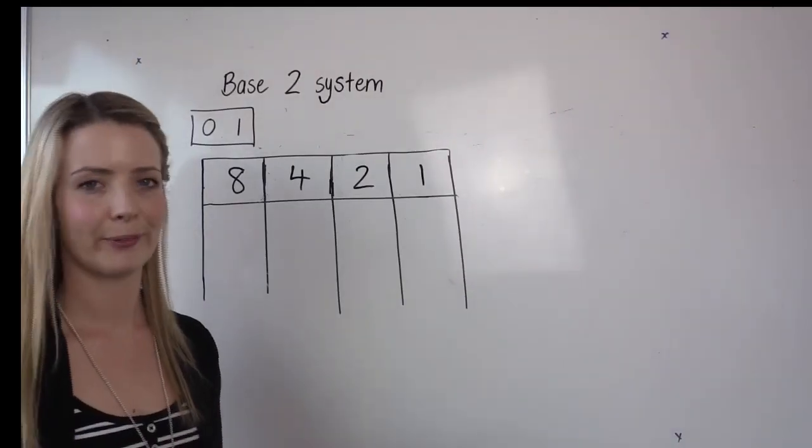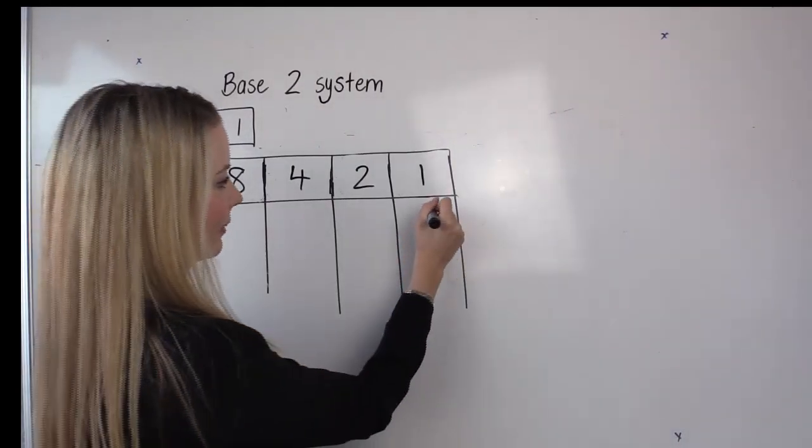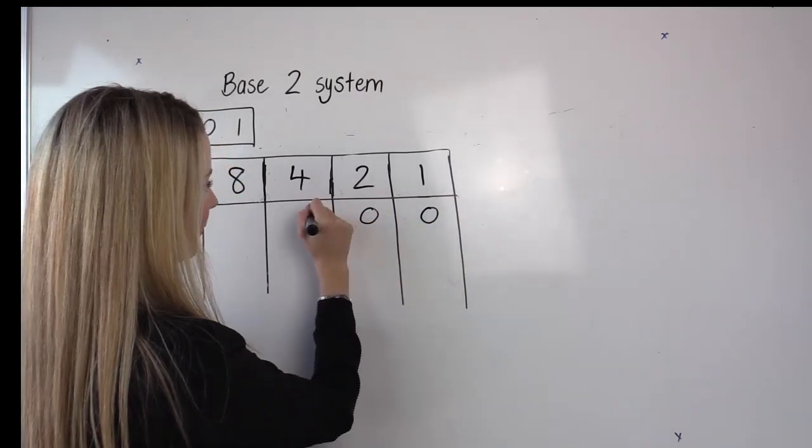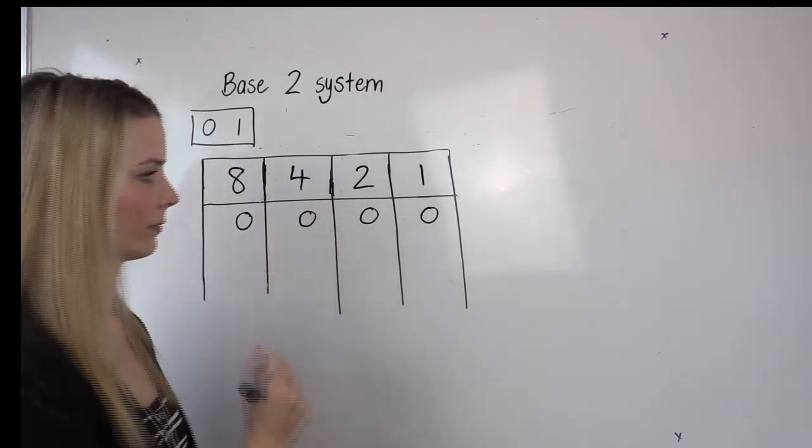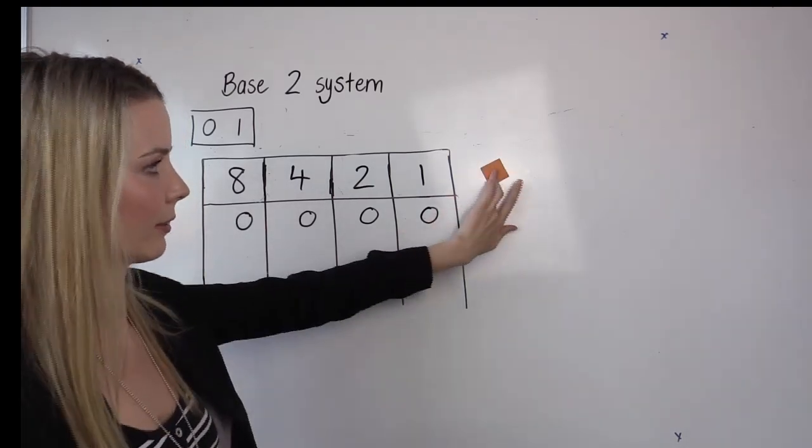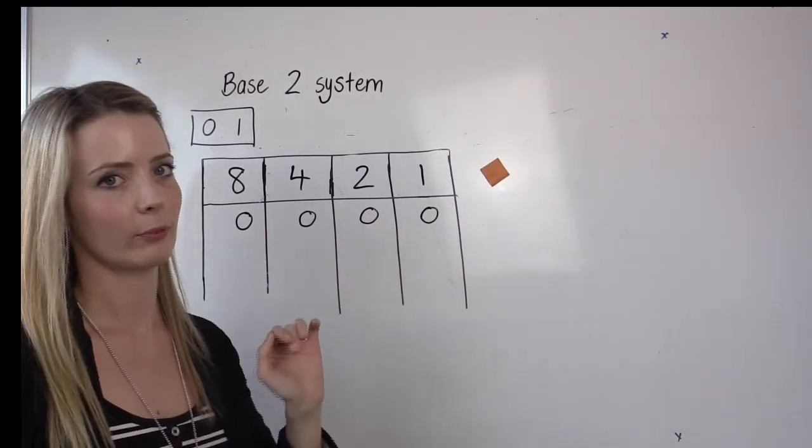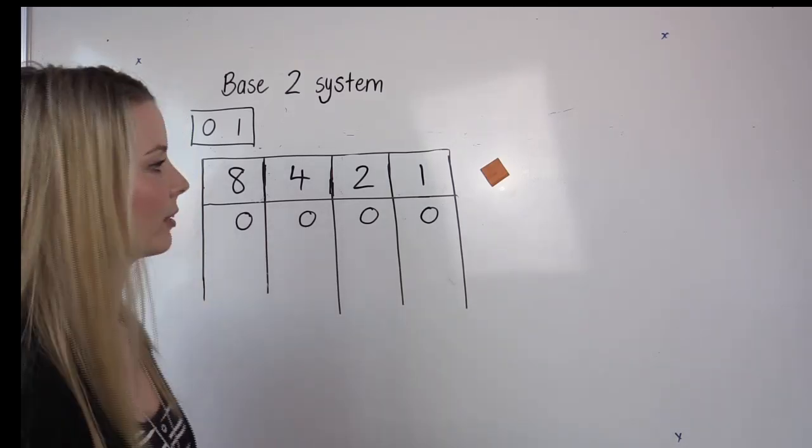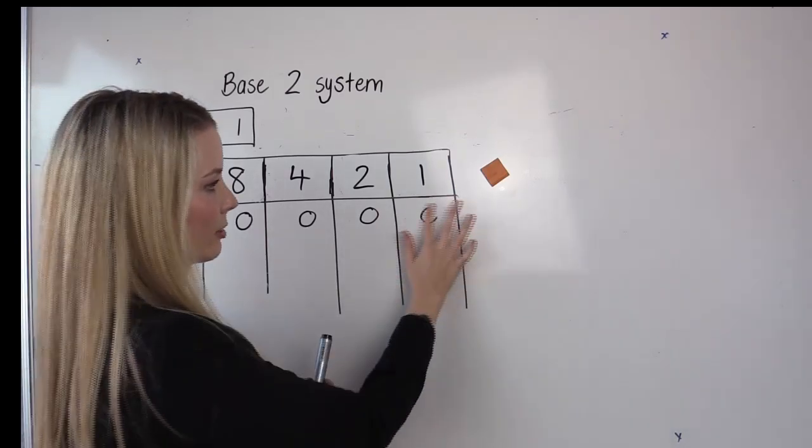Binary. If I have nothing, then we're going to start with zeros again. Now if I have one object that I need to count and I want to transfer that information, I'm going to change this into one.